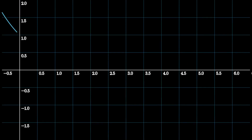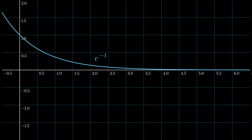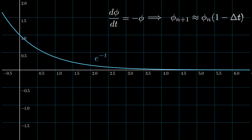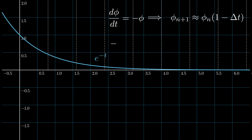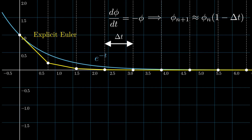Let's plot this on a graph and see how this method compares with the analytical solution e to the minus t. As a reminder, we've started with the differential equation, integrated it approximately, and found a recurrence linking phi_n+1 to phi_n. We split the time axis into finitely many times each spaced delta t apart and run the algorithm. With a time step size of 0.8, and using the explicit Euler method starting at phi_0 equals 1, the graph we get looks like this. The accuracy is a bit disappointing — it tends to overestimate the slope — but it looks vaguely similar to the analytical solution.